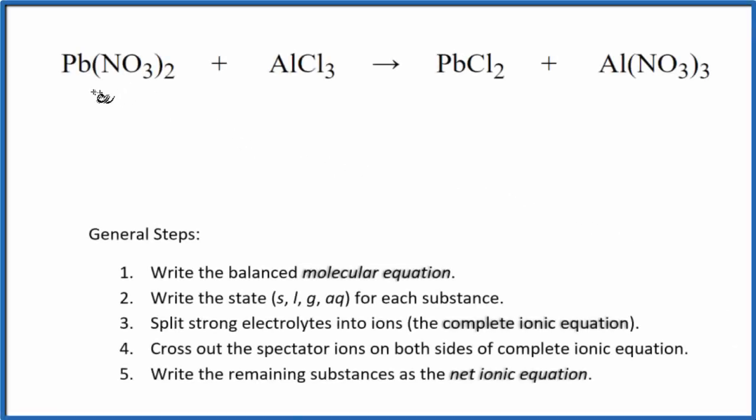In this video, we'll write the balanced net ionic equation for Pb(NO3)2 plus AlCl3. This is lead 2 nitrate plus aluminum chloride. First thing we need to do is balance the molecular equation.